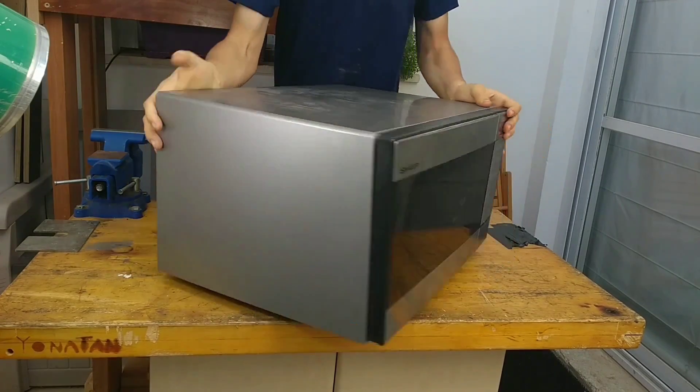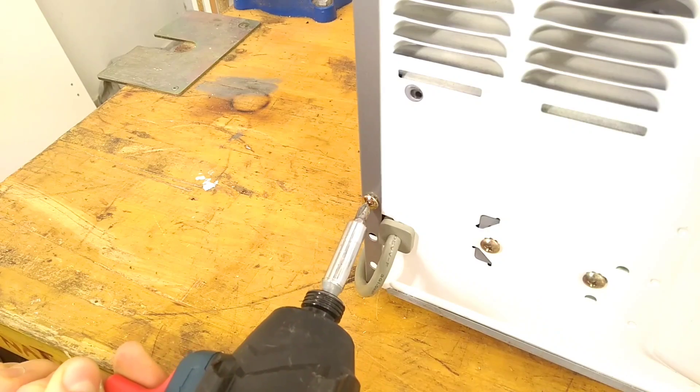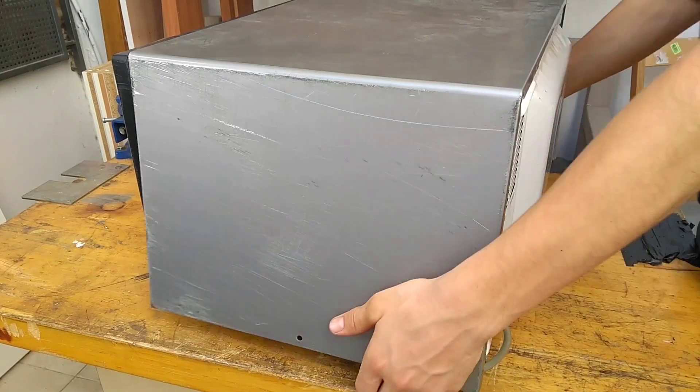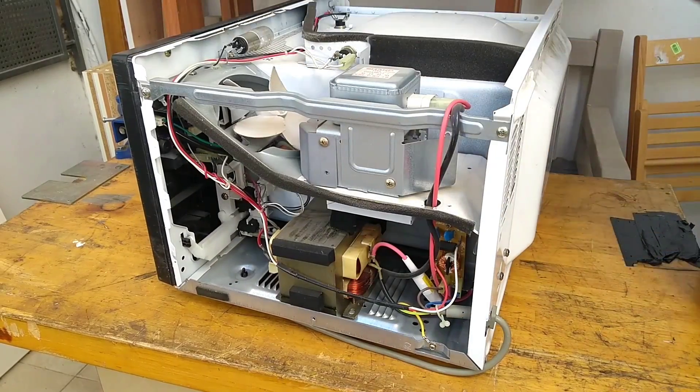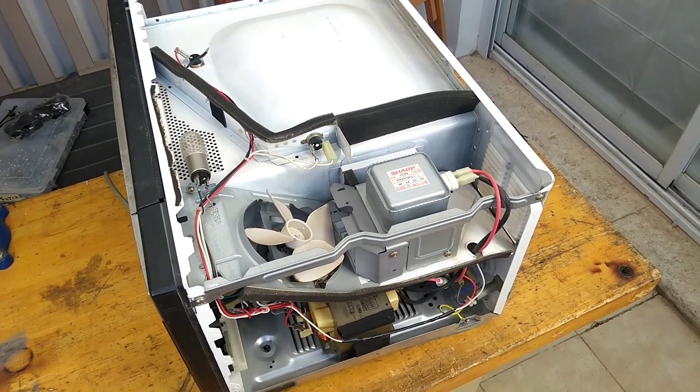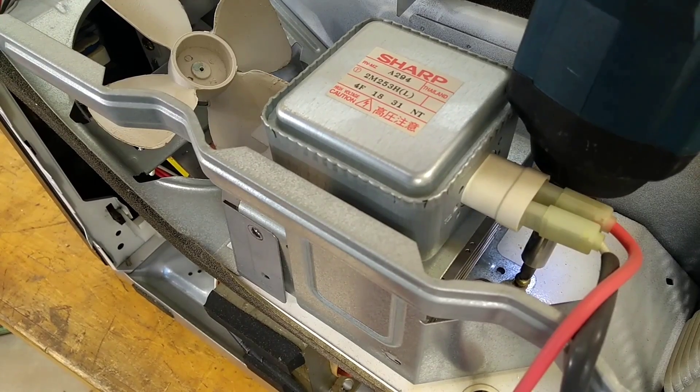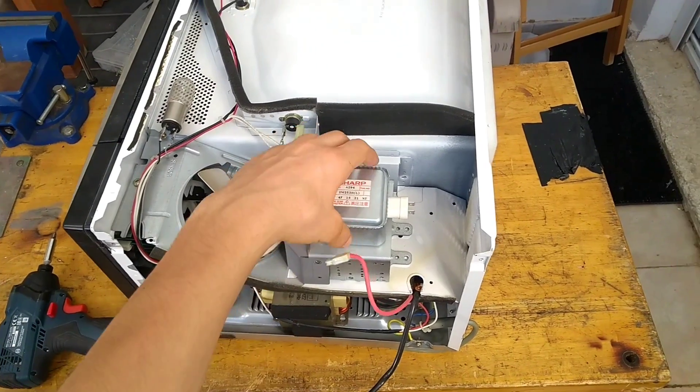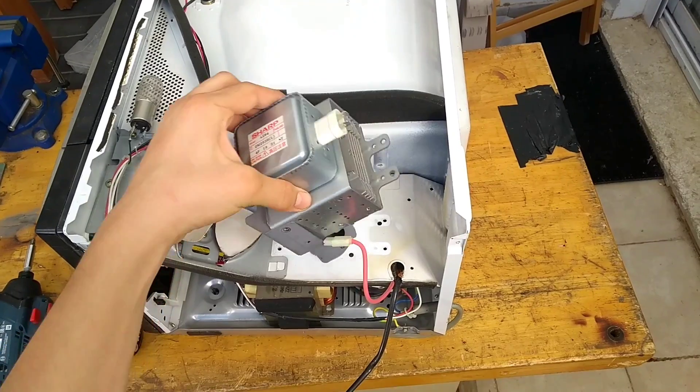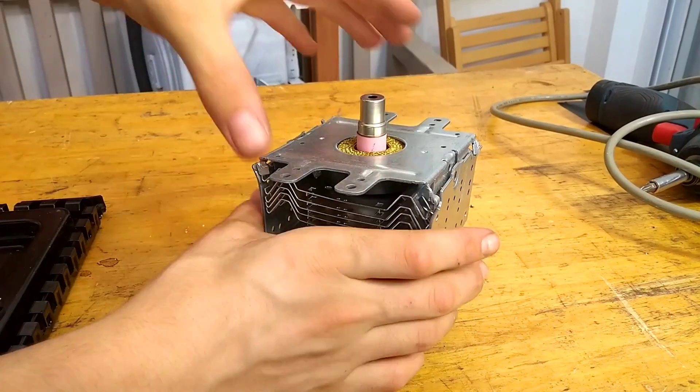For some unknown reason, microwaves are known as a common source for harvesting magnets, but doing so can actually be quite dangerous. To get the magnets you need to locate the magnetron. Inside there are two colored beryllium insulators. Scratching or breaking these emits dust which is extremely toxic if inhaled, so in short it's a really bad idea to mess with them.